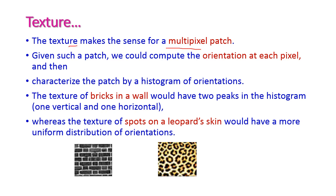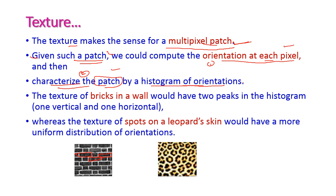In an image, the texture makes up multipixel patches. We compute the patches by orientation at each pixel and then characterize the patch by the histogram of orientation — how the patch will be repeated and in what pattern. For the texture of bricks, the first image would have two peaks: one horizontal and one vertical. For spots on a leopard skin, there is a more uniform distribution of orientation.